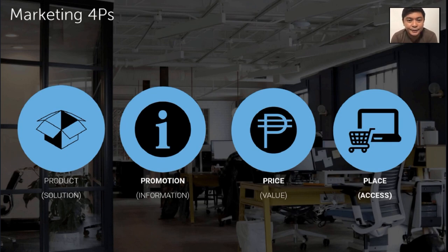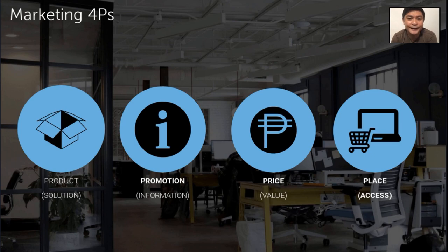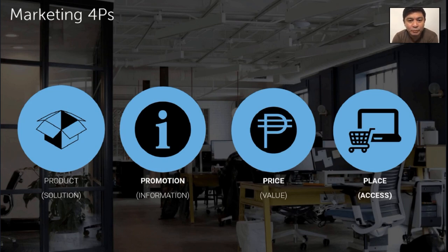Instead of price in the marketing four P's, we offer value. Price can be set through several methods. The first is cost pricing — you compute the total cost and add a certain percentage as your markup, and that becomes the total price. For example, if your cost is 100 pesos, just add a 50% markup and your price per item would be 150 pesos. Simple as that.